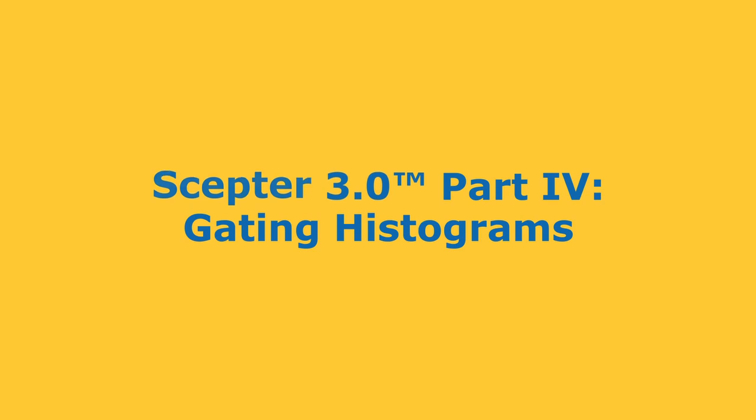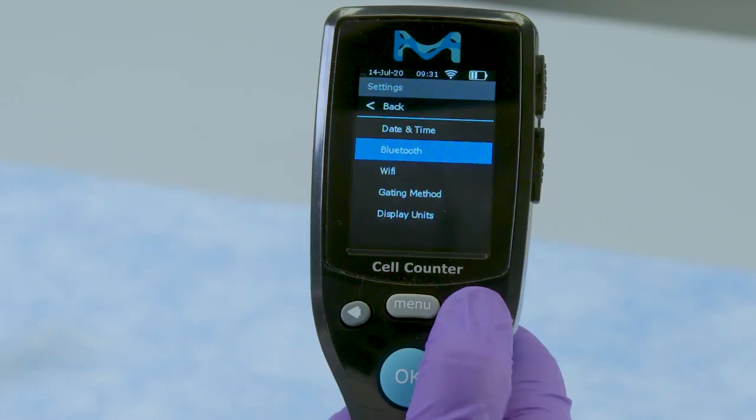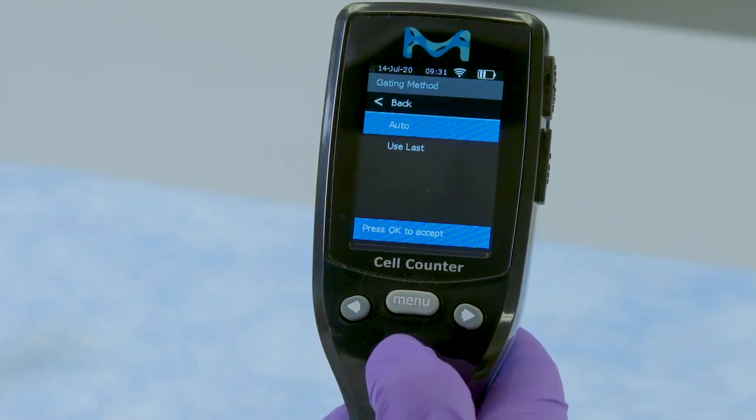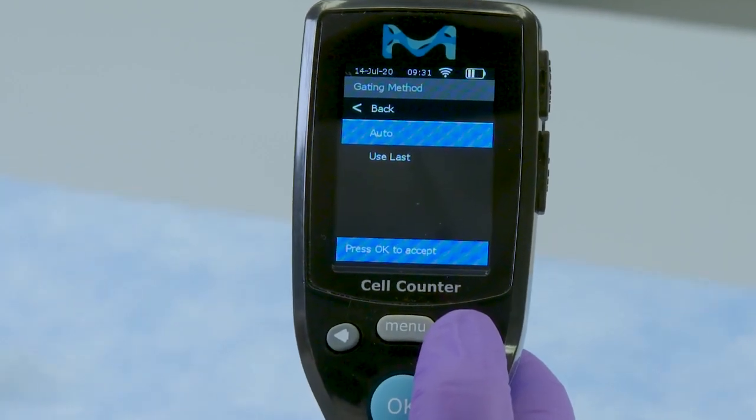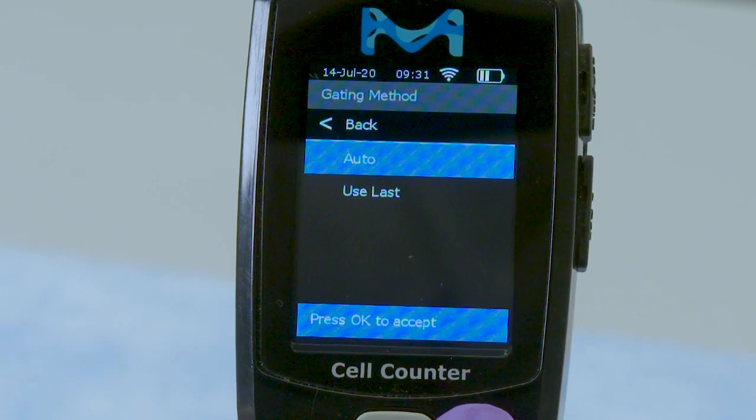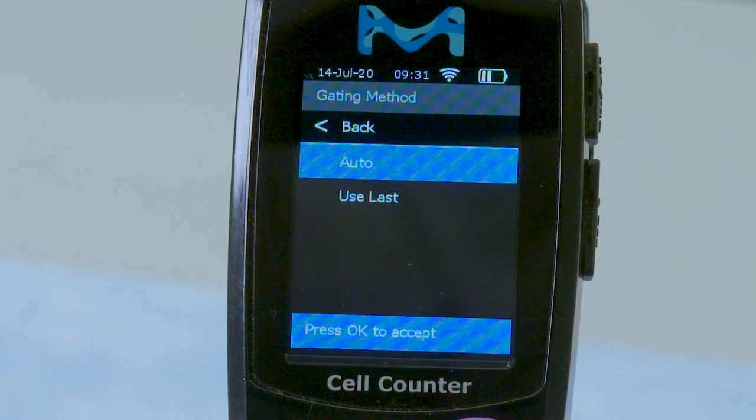Gating histograms with SEPTOR 3.0. For first-time usage set to auto gating, you can decide to continue with the gating using the auto gating setting or change to use last for similar sample runs.